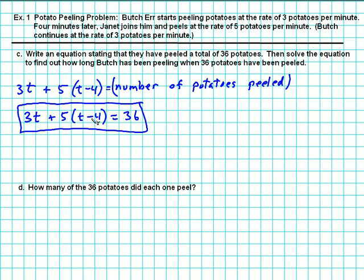First step: Let's use the distributive law to spread all the pieces out on the table here. So we have 3t plus 5t minus 5 times 4, which is 20, equals 36.